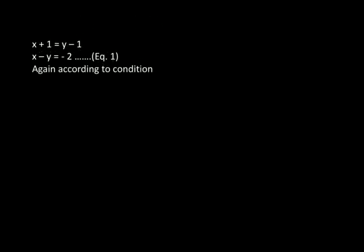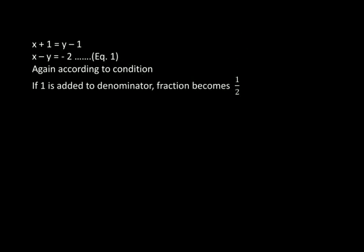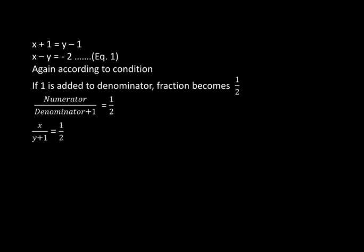Now we move to the second condition of the question. The condition is that if 1 is added to the denominator, the fraction becomes 1 upon 2. There is no change in the numerator; only we add 1 to the denominator. So numerator upon denominator plus 1 equals 1 upon 2, that is x upon y plus 1 equals 1 upon 2.